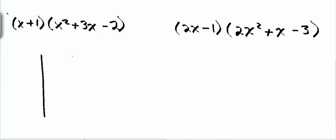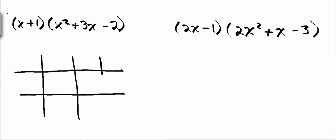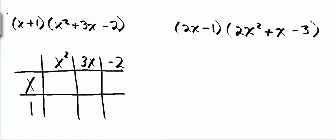I'm going to allow a little more space and draw an extra line. I'll bring down my first polynomial and place each term vertically. Then I take each of the three terms and allow a slot for each one. I do the same thing — multiply each row times column.